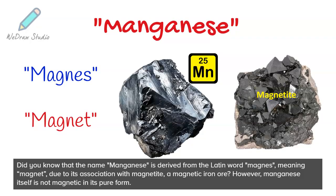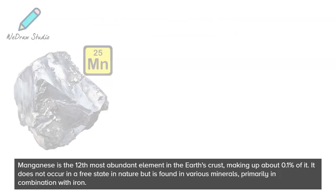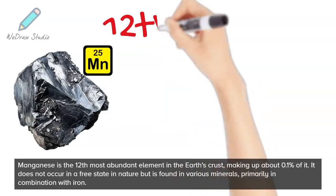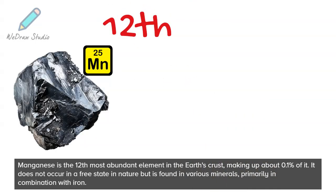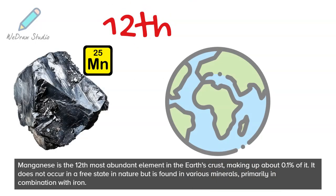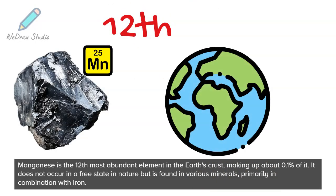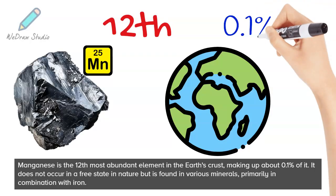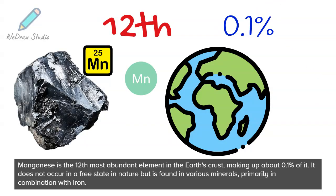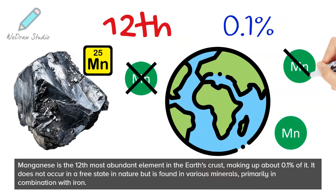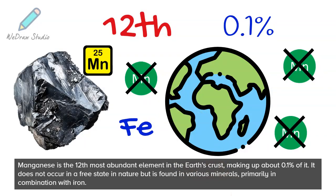However, manganese itself is not magnetic in its pure form. Manganese is the 12th most abundant element in the Earth's crust, making up about 0.1% of it. It does not occur in a free state in nature, but is found in various minerals, primarily in combination with iron.